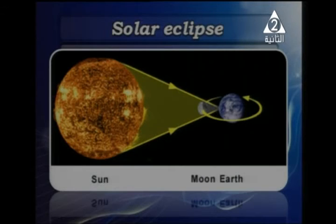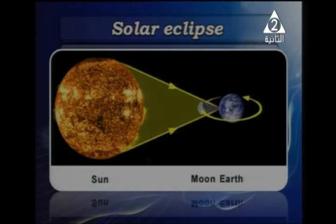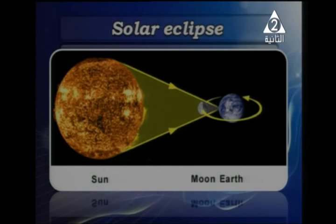The Sun is more than 400 times larger than the Moon, and the distance between the Earth and Sun is about 400 times more than the distance between the Earth and Moon. This means the Moon appears the same size as the Sun from Earth. In a total solar eclipse, the Moon completely covers the Sun. If the Moon moves slightly farther away from Earth than its normal orbit, we see an annular solar eclipse — the Sun appears as a ring in the sky.